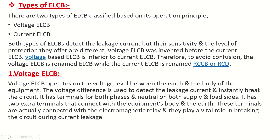Types of ELCB. There are two types of ELCB classified based on their operating principle: Voltage ELCB and Current ELCB. Both types detect leakage current, but their sensitivity and level of protection differ. Voltage ELCB was invented before Current ELCB and is considered inferior. To avoid confusion, Voltage ELCB is now referred to as ELCB, while Current ELCB is renamed RCCB or RCD.